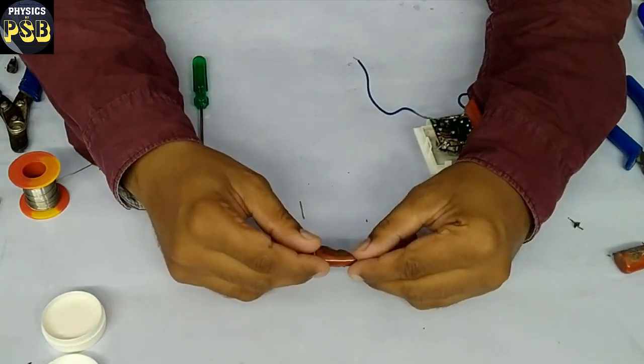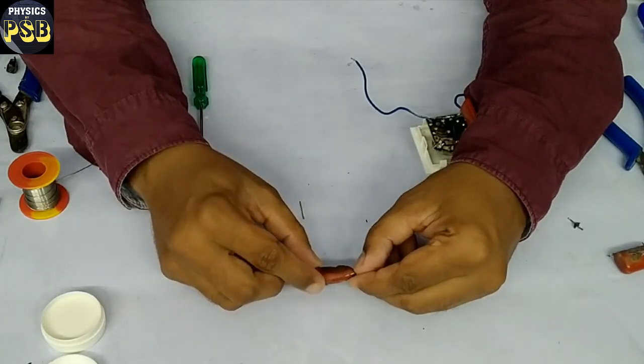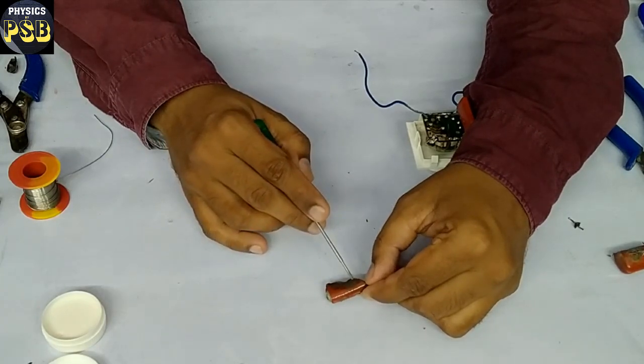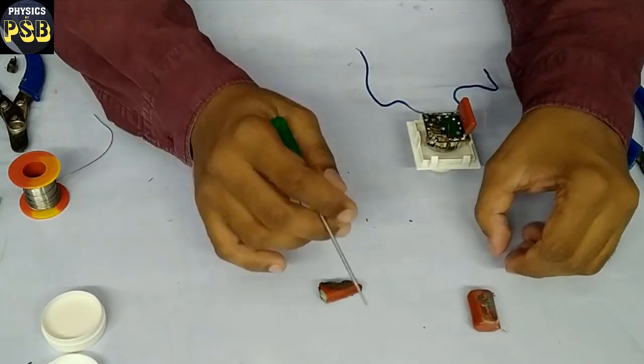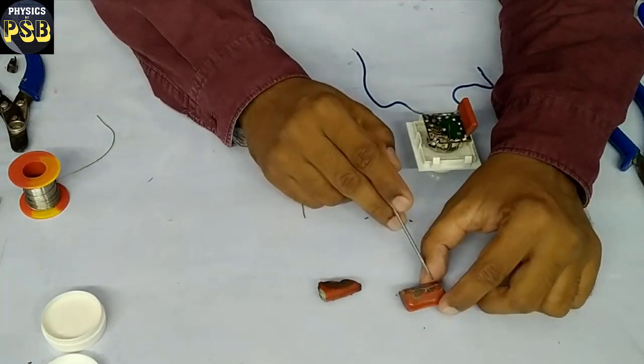Now let me check the value of this capacitor. Here 225 is mentioned here, and this capacitor reads 335.